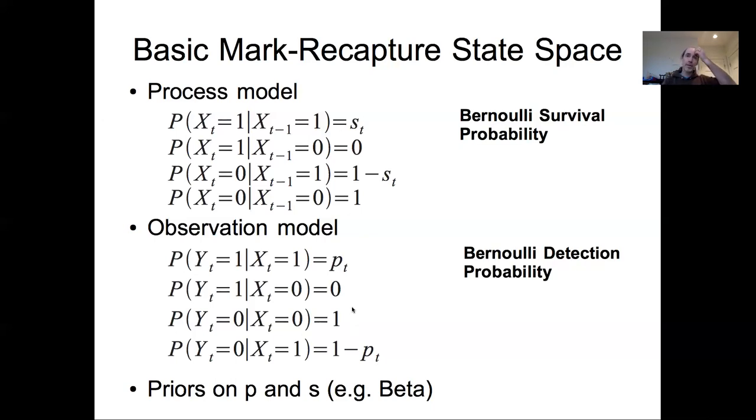So now we have two parameters that both might vary in time that we need to estimate, and so we need to be able to put priors on those. For example, if these were just single parameters, something like a beta would be a very natural choice of a prior because these are parameters that are bound between zero and one. They are probabilities.